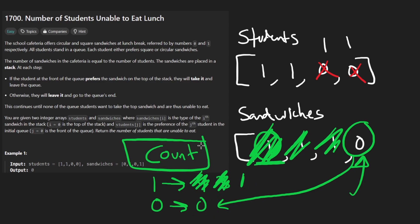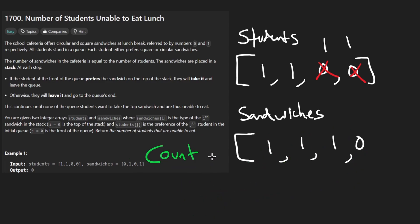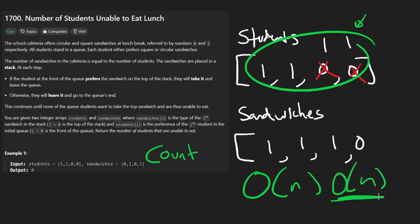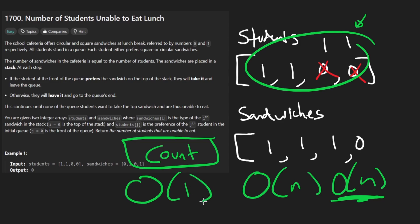This is how we can solve this problem pretty efficiently. We can do it in a single pass — that's O(N). We do have to count the occurrences of each value in the students array first, which is also O(N) time. The space complexity, even though we use a hash map, is going to be constant because we only have two keys: the count of ones and the count of zeros.